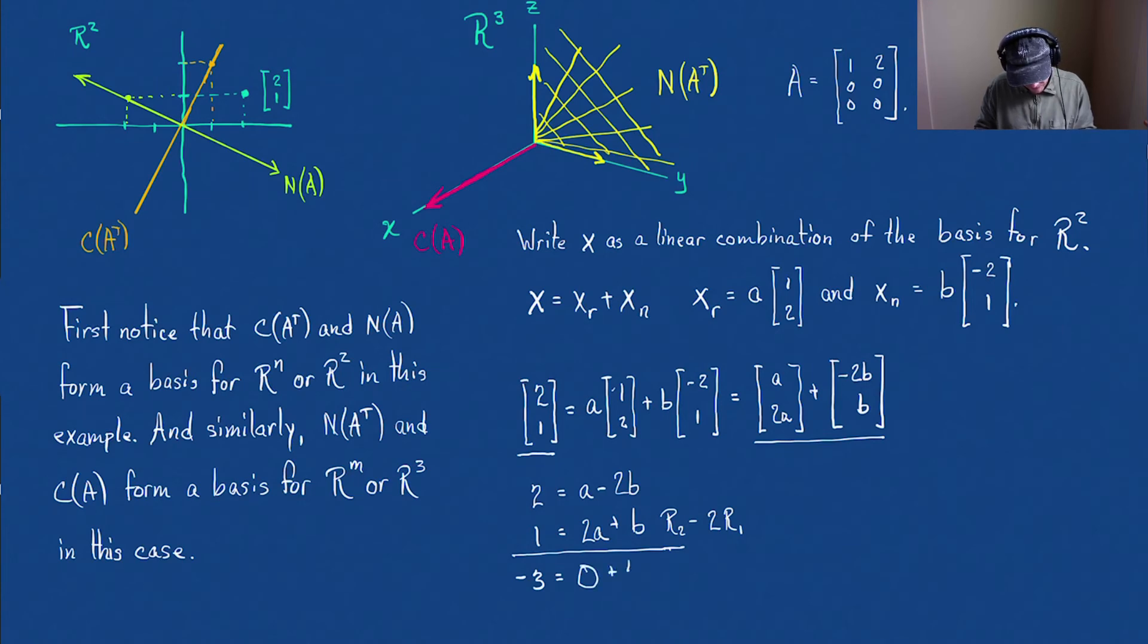So in other words, B is negative 3 fifths. Well, now we can find A. So let's find A. So this is going to be 2 equals A minus 2 times negative 3 fifths. So this is going to be A plus 6 fifths.